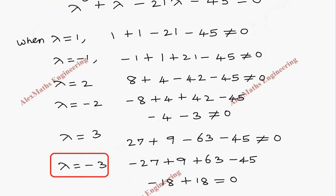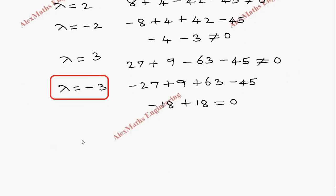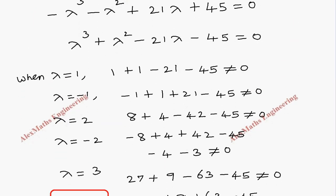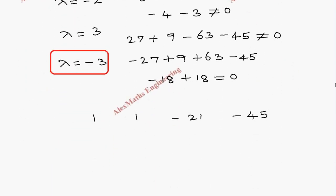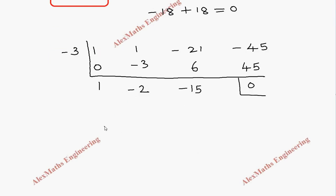Knowing one factor, we use synthetic division to find the other two. Writing the coefficients: 1, 1, minus 21, minus 45. Using the factor minus 3: bringing down 1, multiplying minus 3 by 1 gives minus 3, adding gives minus 2, multiplying gives 6, adding gives minus 15, multiplying gives 45, adding gives 0. The remaining quotient is the quadratic lambda squared minus 2 lambda minus 15 equal to 0.